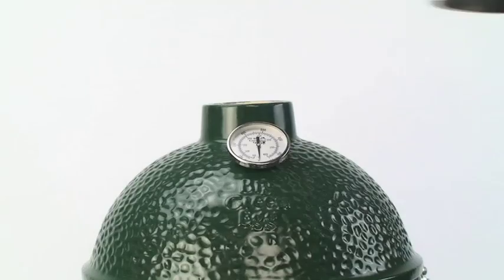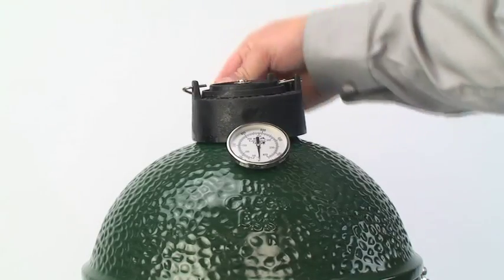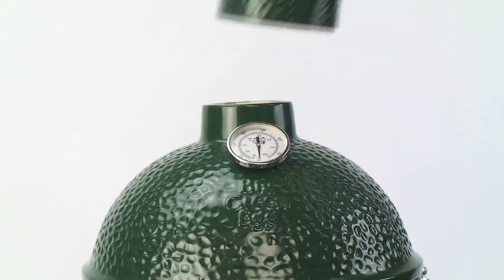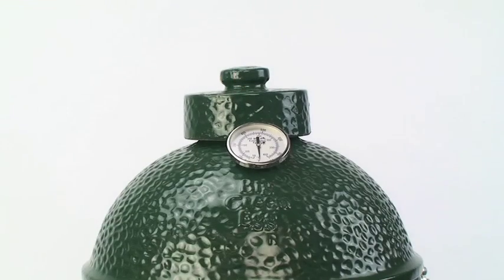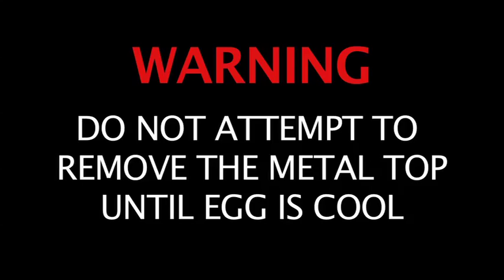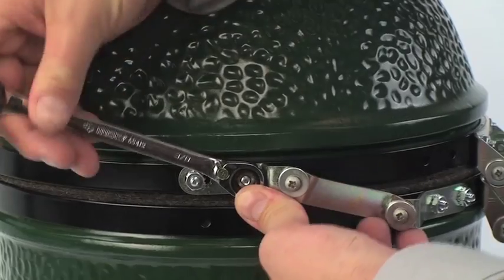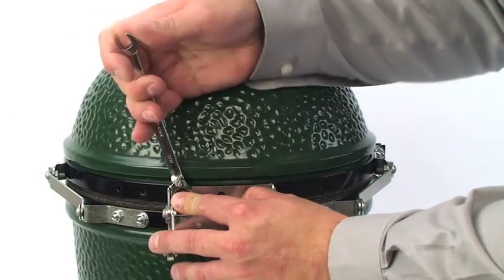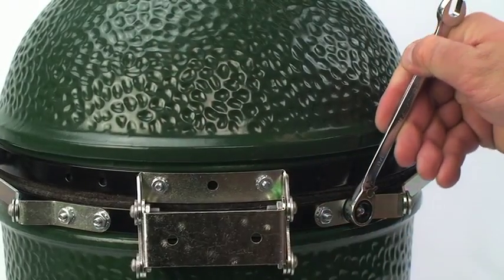Place the dual function metal top on the dome when using the egg to control airflow. When not in use, the ceramic damper top lid is used to seal the opening. Do not attempt to remove the metal top until the egg is cool. Go back over the various nuts and bolts and double check to make sure everything lines up and is tight.